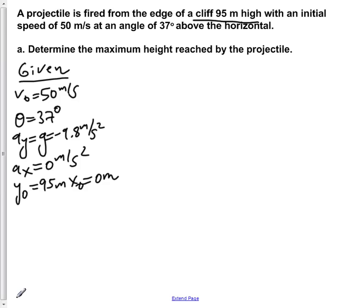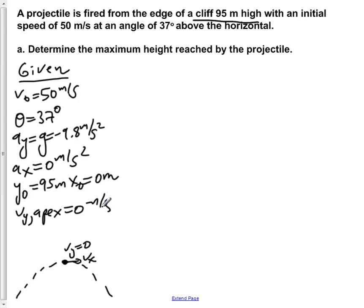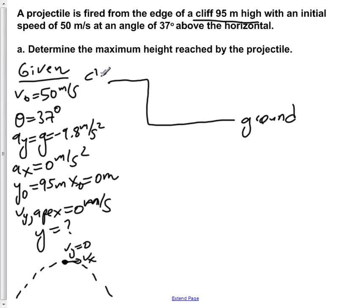From the basic motion of a projectile, when it reaches its apex, its horizontal velocity remains the same but its vertical velocity equals zero. A diagram shows ground level at the bottom, the cliff rising 95 meters, and the projectile fired upward at 37 degrees above the horizontal with a magnitude of 50 meters per second.